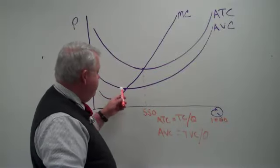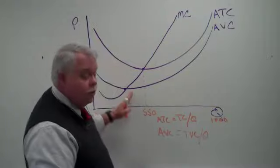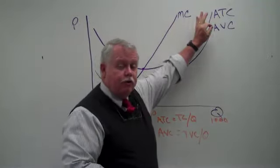It reaches a minimum down here. And then as it increases, as it moves out over more output, it gets closer and closer to the average total cost curve.